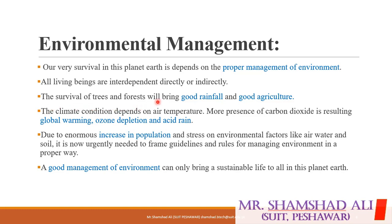The survival of trees and forests will bring good rainfall and good agriculture. Forests have an important role in bringing rainfall which supports good agriculture. Climate conditions depend on air temperature. An increased presence of carbon dioxide results in global warming, ozone layer depletion, and acid rain. Carbon dioxide and carbon monoxide emissions from manufacturing processes can cause acid rain, melting of glaciers, storms, and ozone layer depletion.